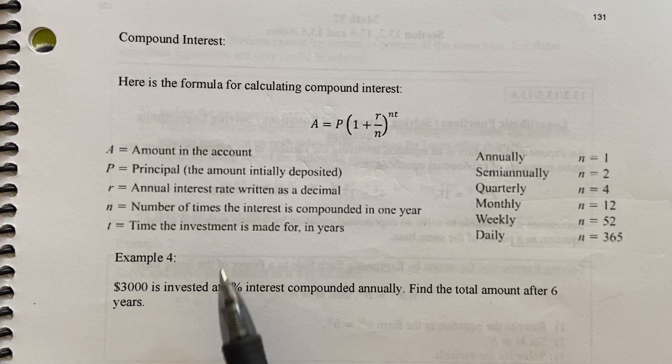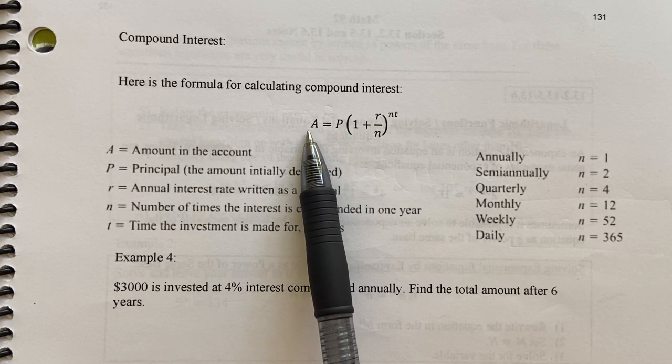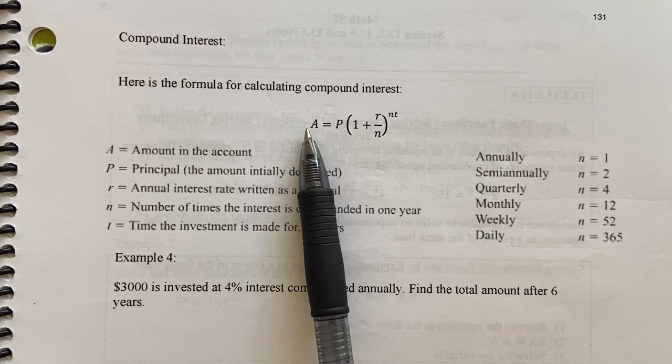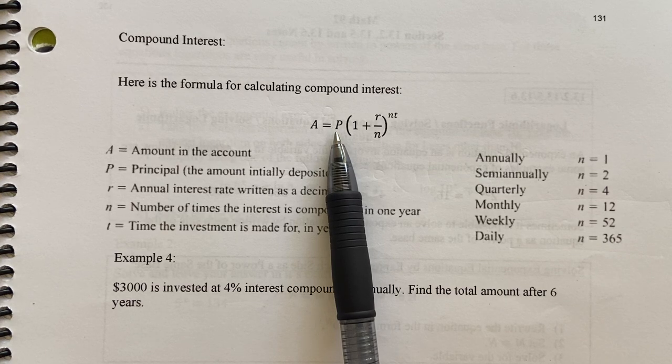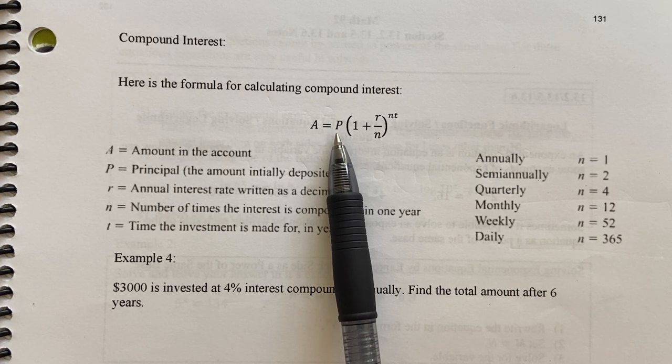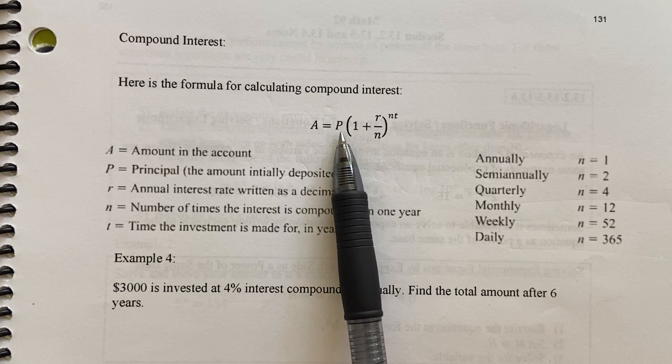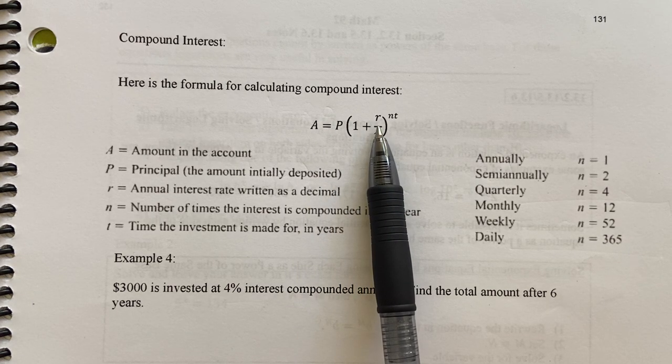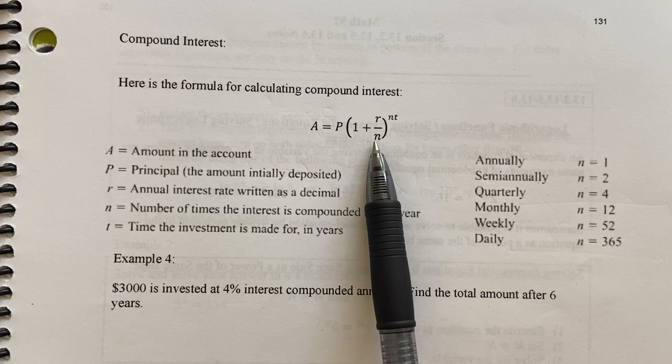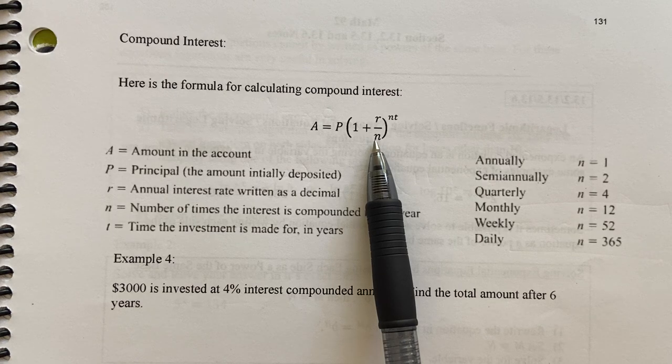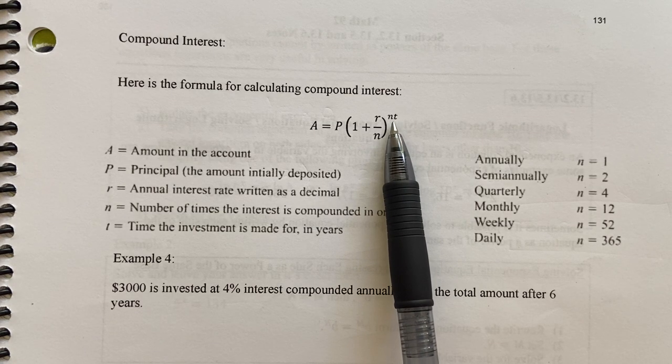Alright. So here's our compounded interest formula. A represents the amount of money in the account at some time T. P is the principle that you invest. So like if you have an extra thousand dollars and invest it, that P would be a thousand. R is the interest rate that the bank and you agree on. N is the number of compounding periods in the year. N is here and here, same N. And then T is the number of years.